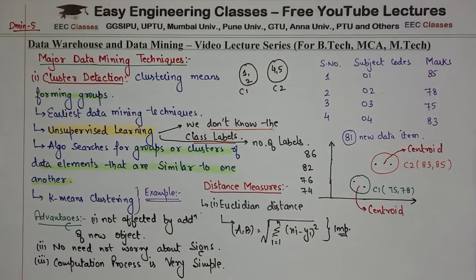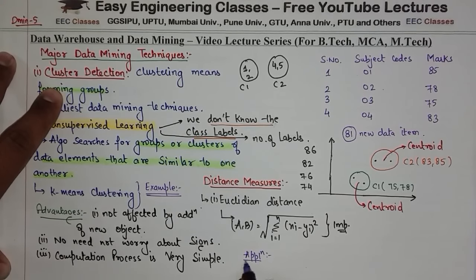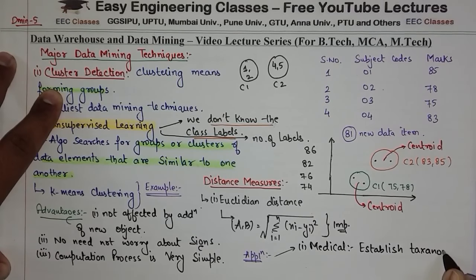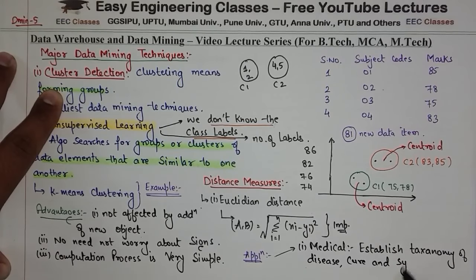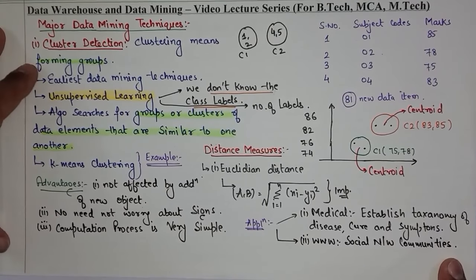We have seen what clustering is and how it is used. The last topic of this video is the applications of clustering. Clustering is used in many industries. In medicine, we use it to establish a taxonomy of diseases, cures, and symptoms. In the World Wide Web (www), we use clustering to recognize social network communities easily — by looking at two users' areas of interest, we can suggest which community they should join.